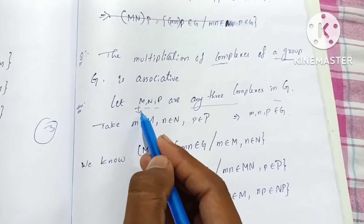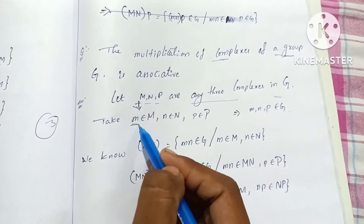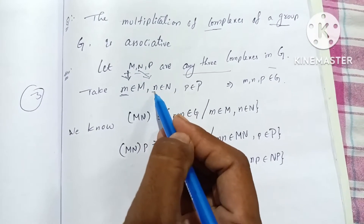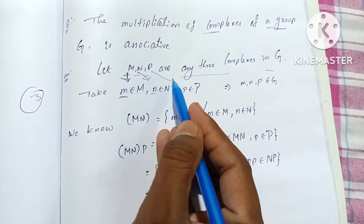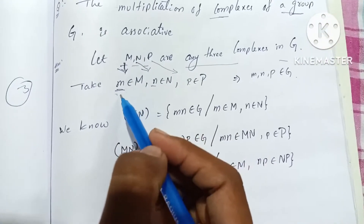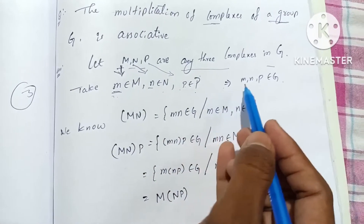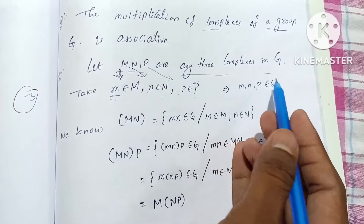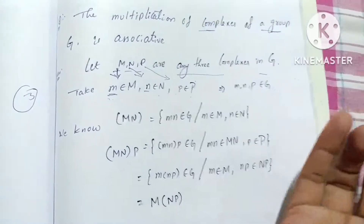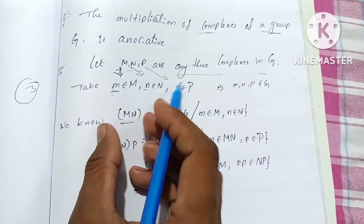Symbolically, m belongs to capital M, n belongs to capital N, p belongs to capital P. Therefore m, n, p all belong to G. We know that the product of two complexes MN consists of elements mn where m belongs to M and n belongs to N.